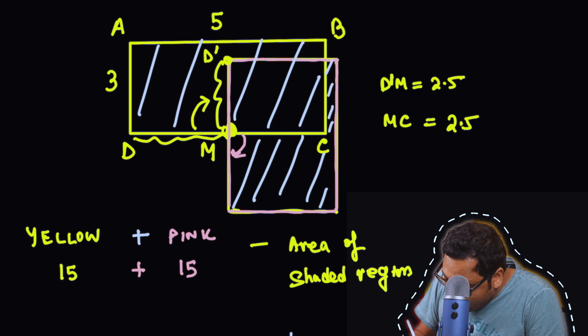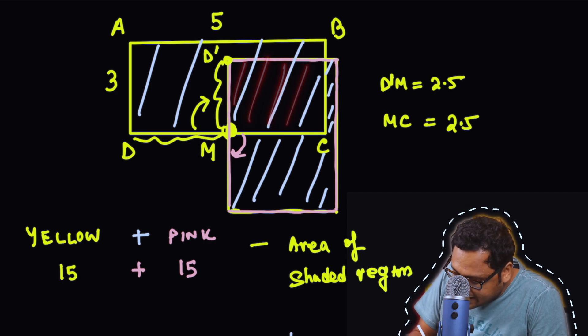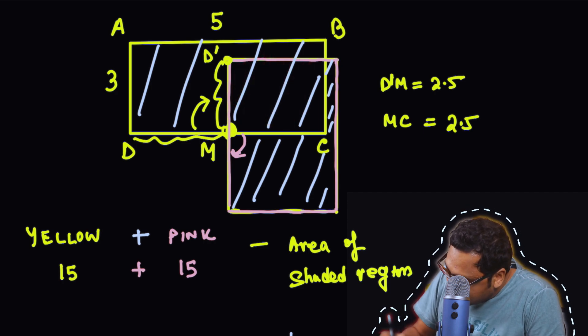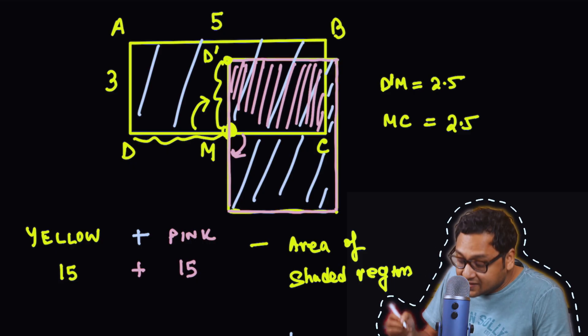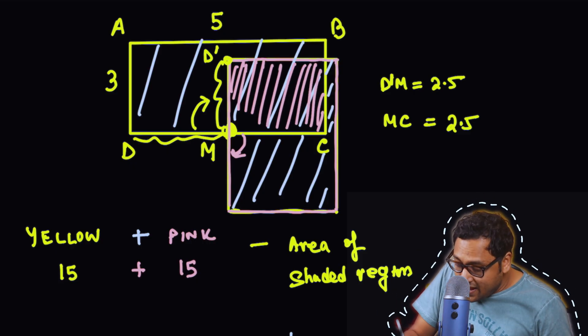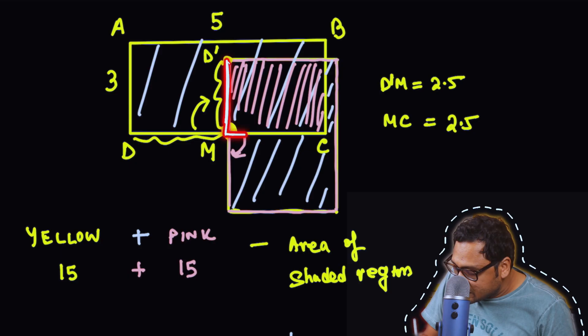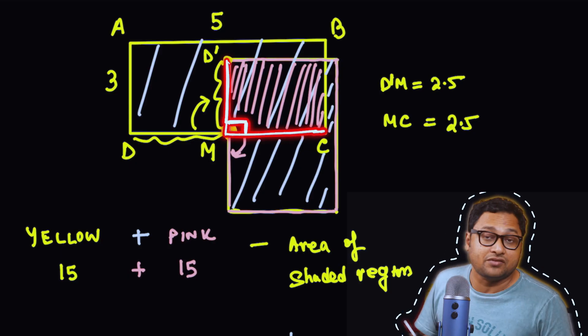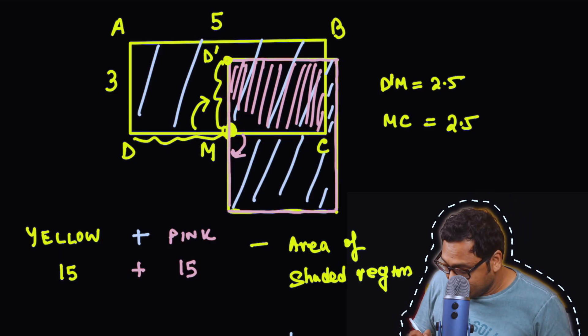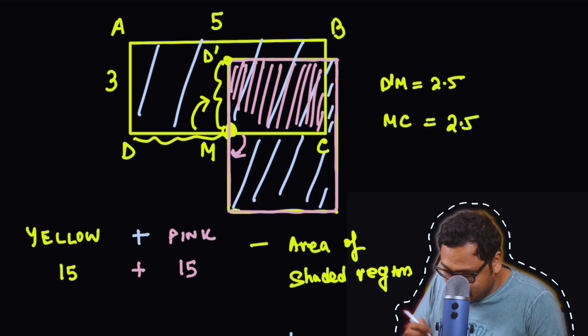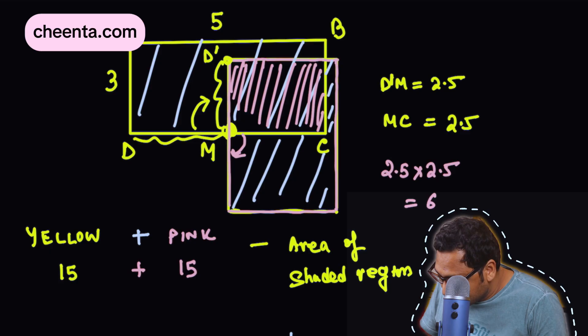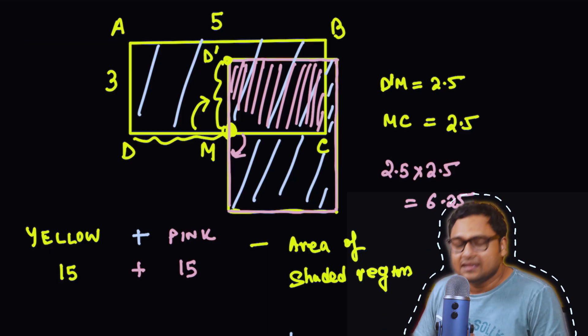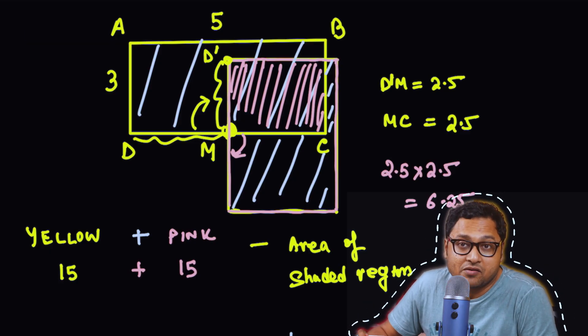Therefore, this little overlapping region, maybe I can color it in pink. This little region is a square. Why? Because this much is 2.5, this much is 2.5, and this angle is 90 degrees. So it's a square. And what is the area of this square? It's 2.5 times 2.5, that is 6.25. That is the area of this particular square.